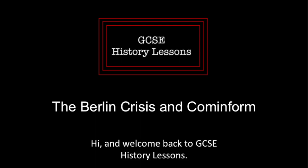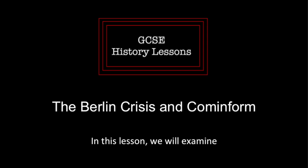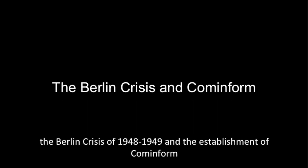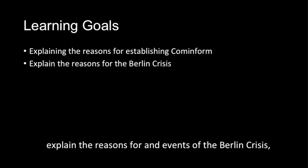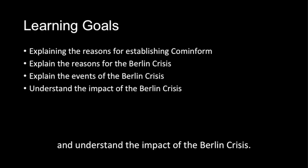Hi and welcome back to GCSE History Lessons. In this lesson we will examine the Berlin Crisis of 1948 to 1949 and the establishment of Cominform. By the end of this lesson you should be able to explain the reasons for establishing Cominform, explain the reasons for and events of the Berlin Crisis, and understand the impacts of the Berlin Crisis.